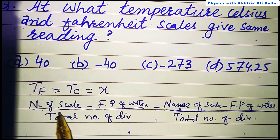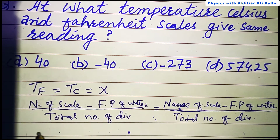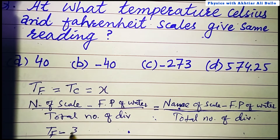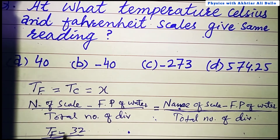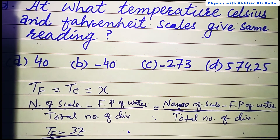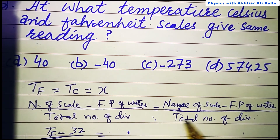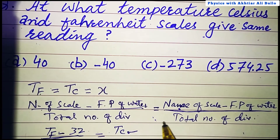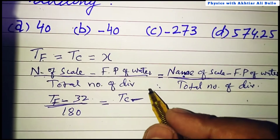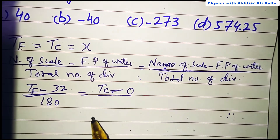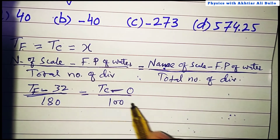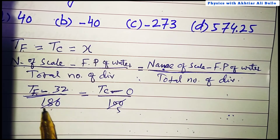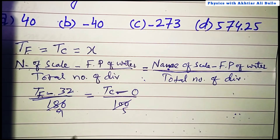We write temperature in Fahrenheit minus the freezing point of water in Fahrenheit, which is 32, divided by the total number of divisions in the Fahrenheit scale, which is 180, equal to temperature in Celsius minus 0, divided by 100. The ratio simplifies: 180 is 9 times and 100 is 5 times.